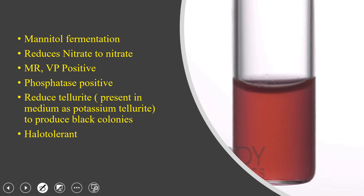There are other biochemical tests to differentiate Staphylococcus aureus, one of which is mannitol fermentation. Staphylococcus aureus will ferment mannitol into acid. Many of you may know the medium called MSA — Mannitol Salt Agar. On MSA, mannitol is converted into acid, and due to the rise in acidity, the phenol red indicator changes color from pink or red to golden yellow.